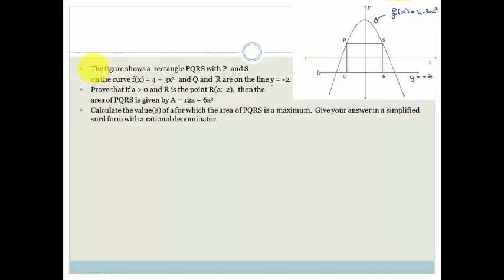Right, so now they say prove that if A is greater than 0, and R is the point A minus 2, so that's A minus 2, then the area of the rectangle, so they want the area of this rectangle, is given by A is equal to 12A minus 6A cubed.